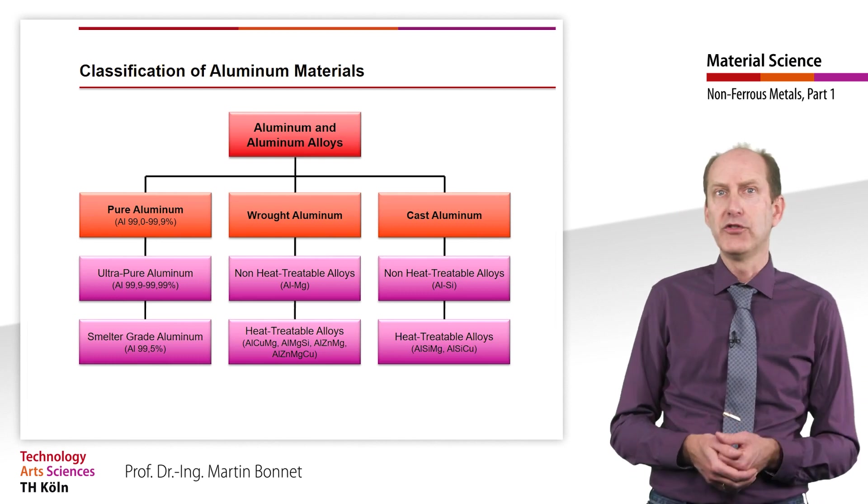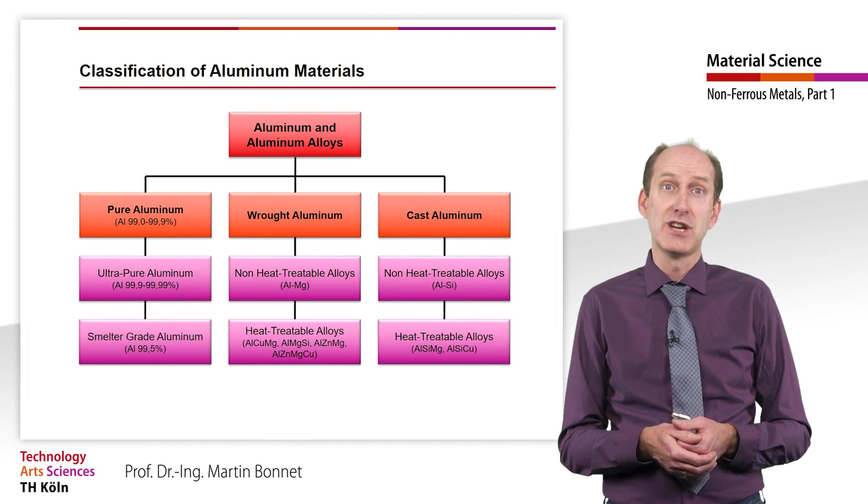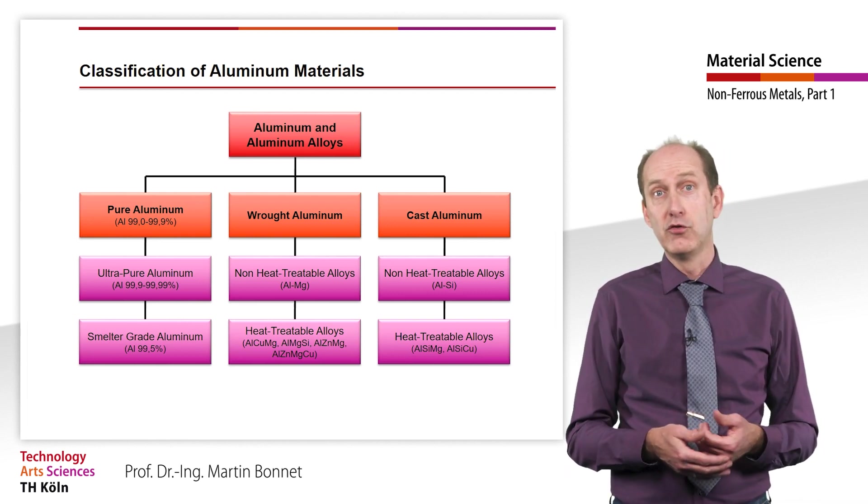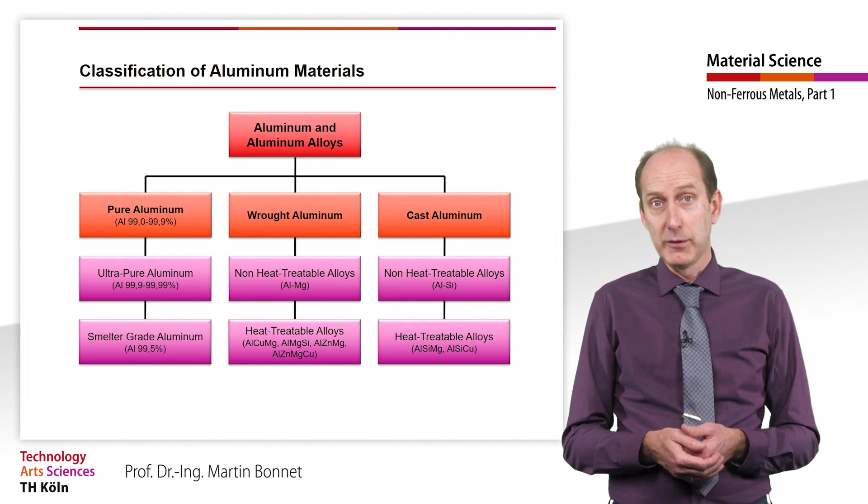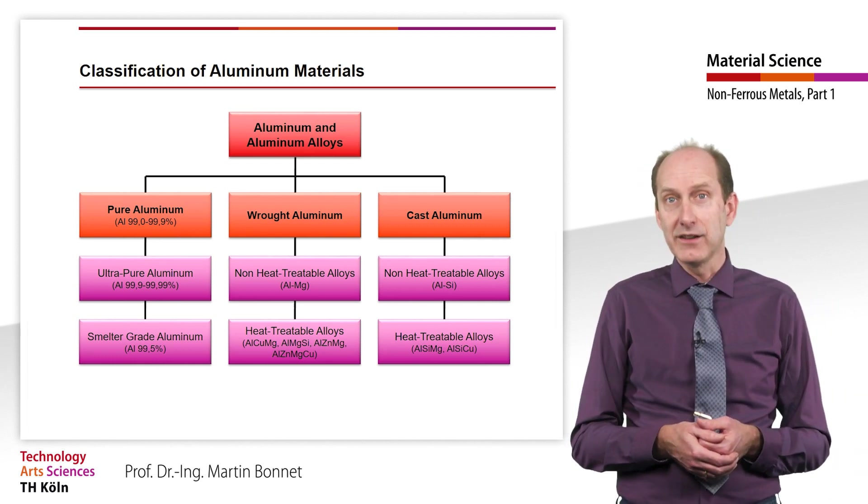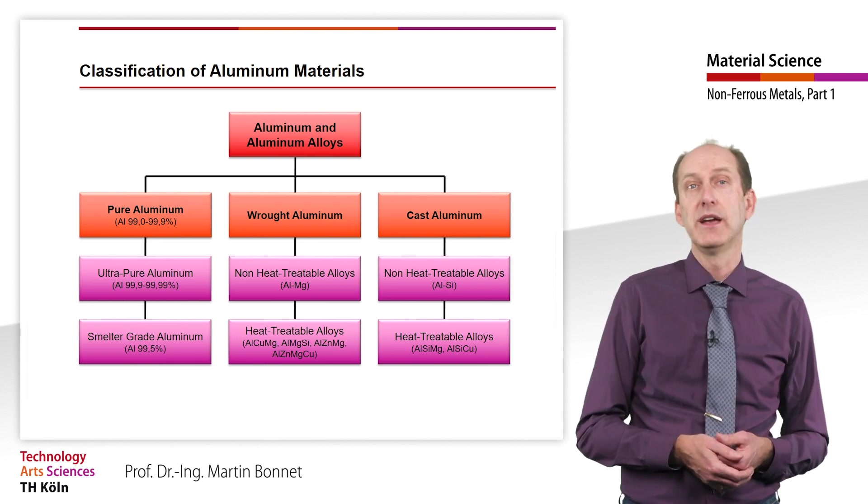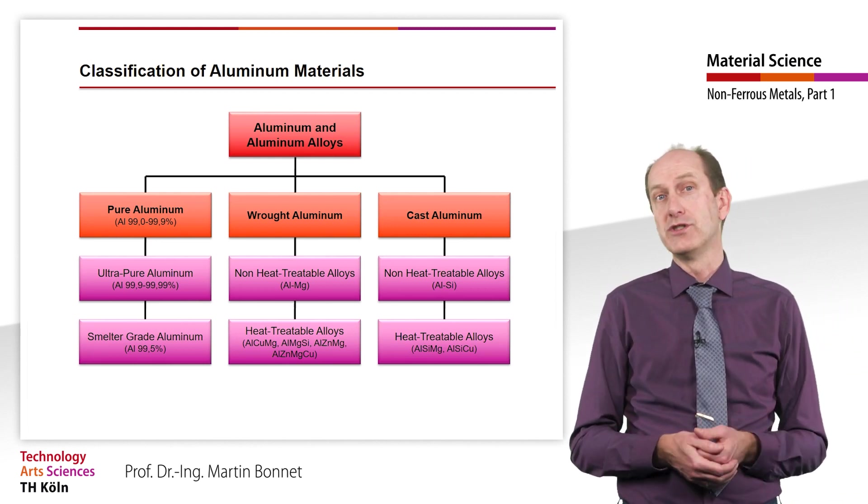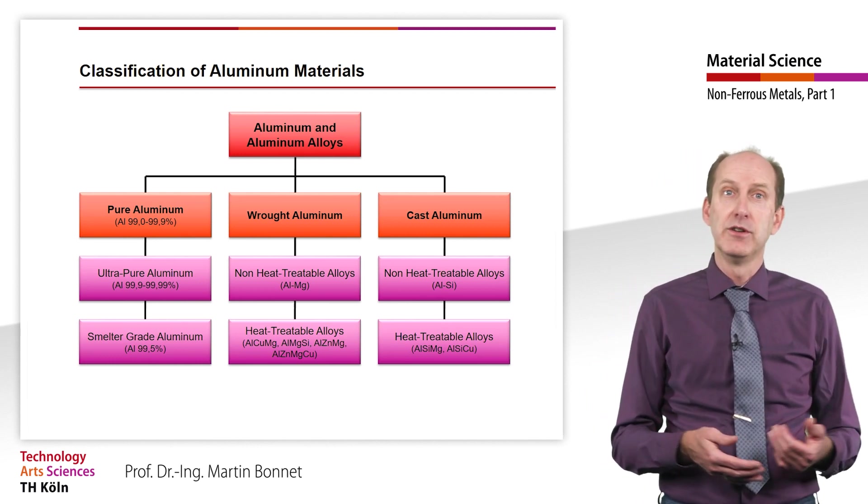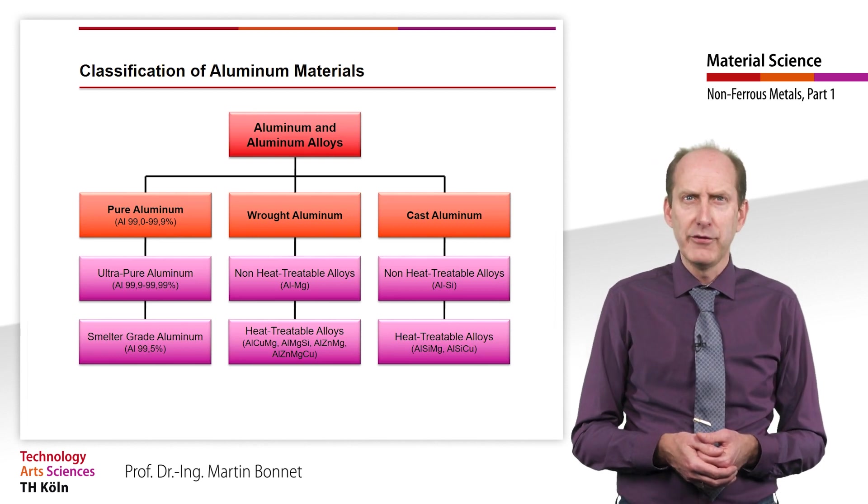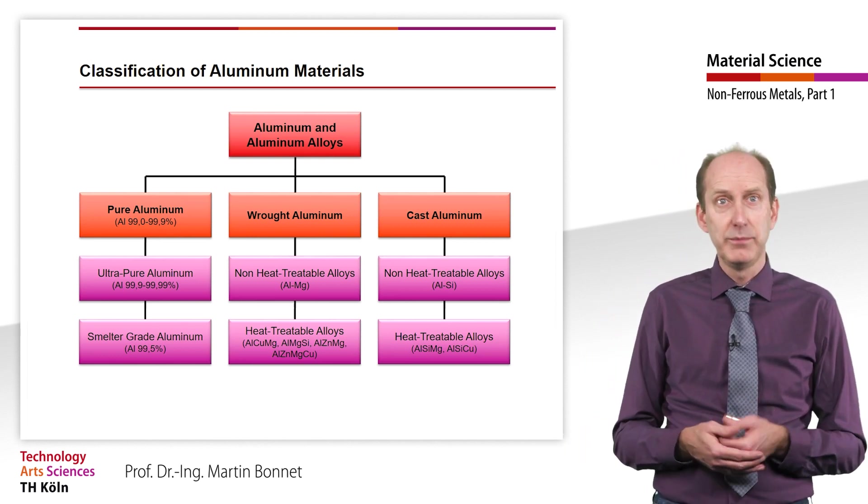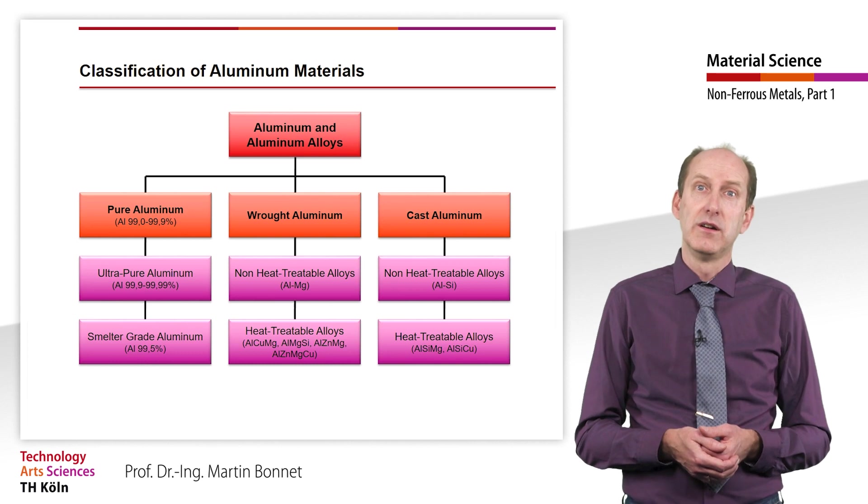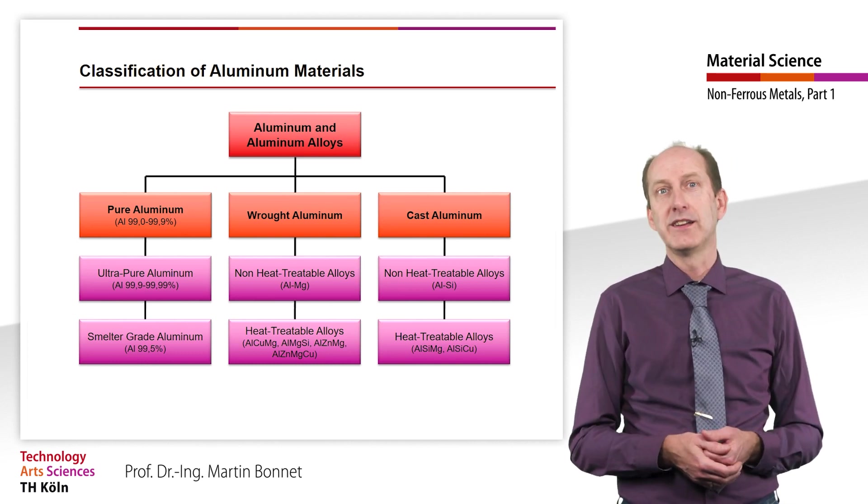For the selection and processing of aluminum materials, both non-age hardenable and age hardenable alloys are available within the group of wrought and cast alloys. Representatives of non-age hardenable naturally hard alloys are mainly aluminum-magnesium and aluminum-silicon alloys. Their increased strength is based on the mechanism of solid solution hardening, which we learned about in the chapter Phase Diagrams. Age hardenable alloys have the advantage that their processing can still be carried out in the soft state and then increase in hardness and strength can be achieved via precipitation hardening, which we will look at in more detail.